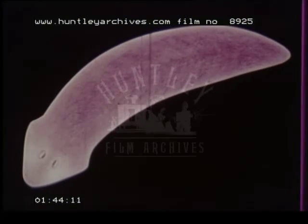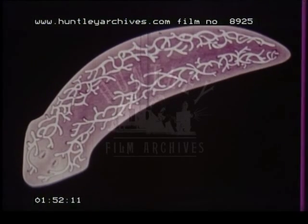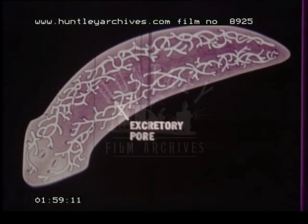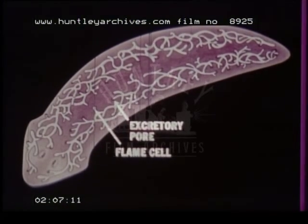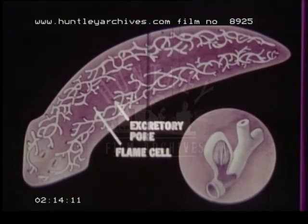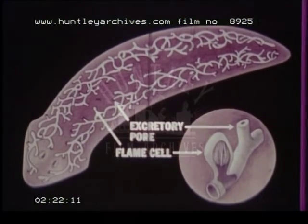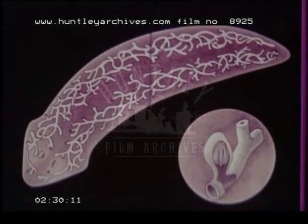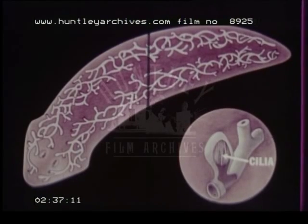However, a planarian does have an excretory system which consists of a series of branching tubes. The outer ends of these branching tubes open to the outside. The inner ends terminate in flame cells. Each flame cell contains a space which connects with an excretory duct. A tuft of cilia projects into the space and the beating of the cilia creates a current, which forces water through the branching tubes to the outside.